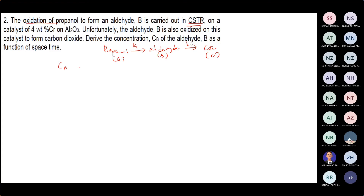What is CB in terms of T? Remember, to get T from here, of course we integrate. Back to the basic law of rate of reactions. We do one side at a time — which is A to B with K1.